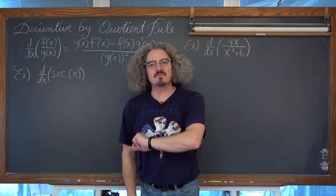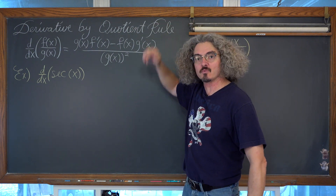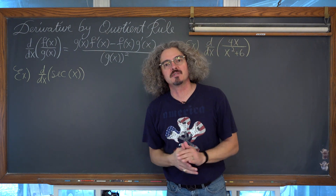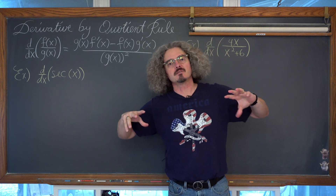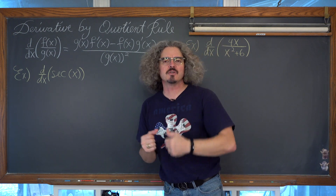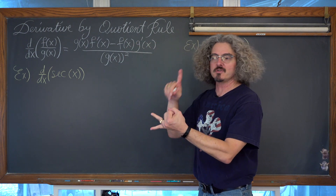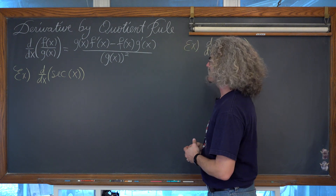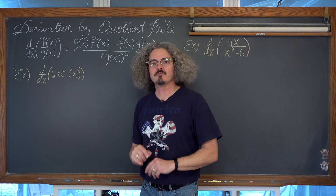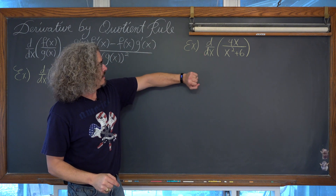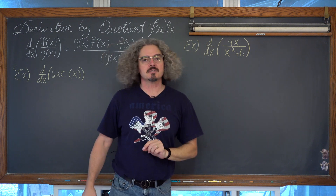BAM! Mr. Tarrou! In this video we are going to be doing three examples of finding derivatives using the quotient rule. Down below you will find timestamps to jump ahead to any one of the three examples. You are also going to find a link to my homepage of my YouTube channel where you can find any one of the 700 plus math videos I've done to date for Algebra 1, 2, Calc 2, and Statistics. Our first two examples are the derivative of secant of x and the derivative with respect to x of 4x over x squared plus 6.